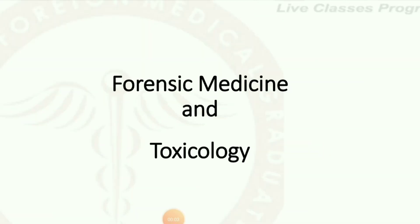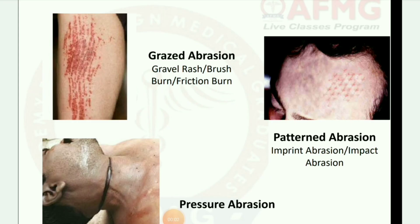Next subject is forensic medicine and toxicology. Here are some pictures of mechanical injuries. Grazed abrasion — also called gravel rash, brush burn, or friction burn. Patterned abrasion — imprint abrasion and impact abrasion.